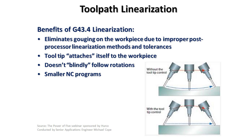Toolpath linearization is one of the high-end controls that we have on 5-axis machines, and it is used to eliminate gouging of the workpiece because the rotary axis — a B-axis in the case of the image shown here on the slide — does not blindly rotate.